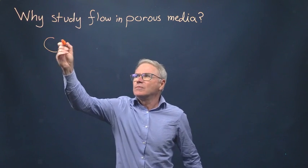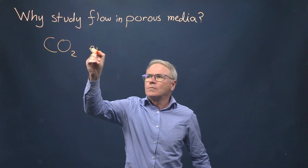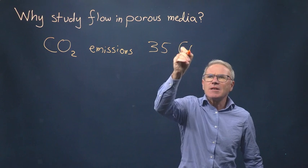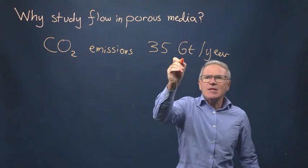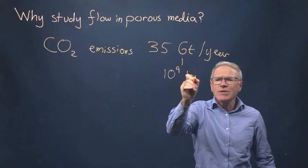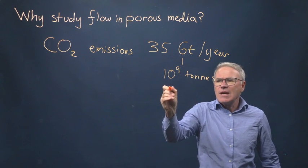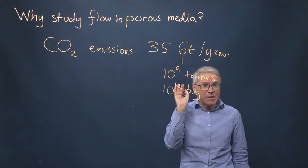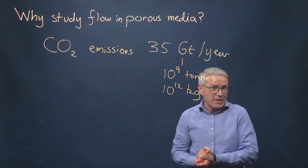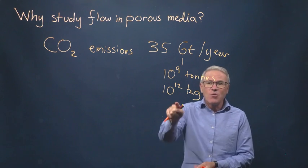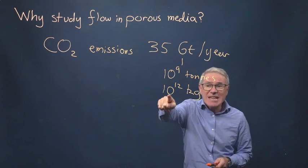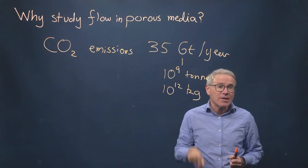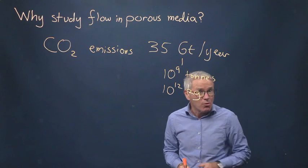Our current CO2 emissions were approximately 35 gigatonnes per year. A gigatonne is 10 to the 9 tonnes or 10 to the 12 kilograms. If we want to store a substantial fraction of that to prevent that CO2 going into the atmosphere, we're needing to store 10 to the power 12 type masses of CO2 in the subsurface. That can only be done deep underground in porous rock.